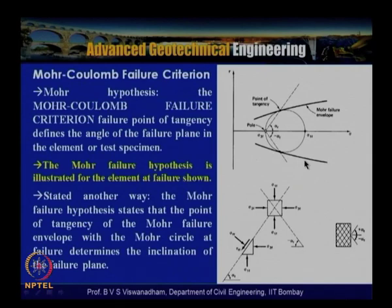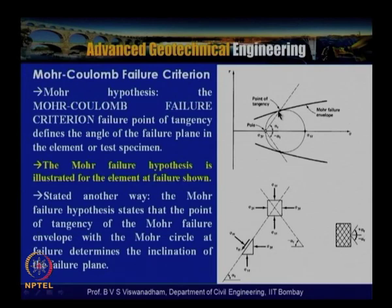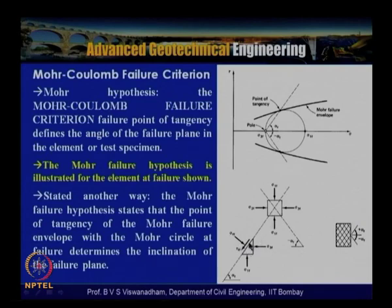The point of tangency of the Mohr failure envelope with the Mohr circle defines the angle of the failure plane in the element or test specimen. Drawing a line from the pole through the point where the Mohr envelope contacts the Mohr circle gives the inclination of the failure plane. The stresses tau_ff and sigma_ff arise from the major and minor principal stresses sigma_1f and sigma_3f.